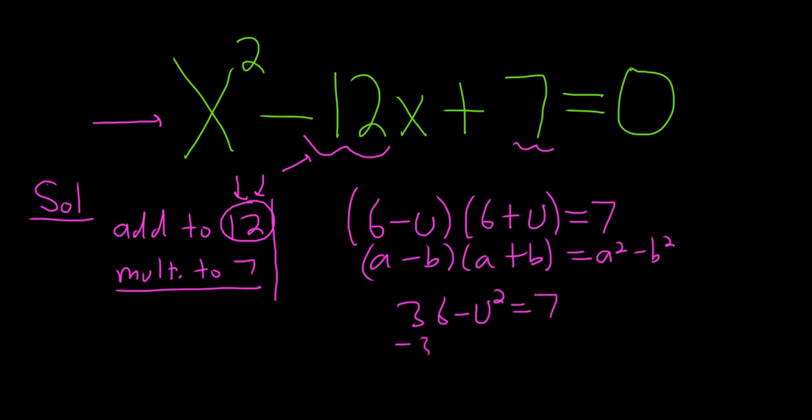You subtract 36, so minus 36, minus 36. That gives us u squared equals negative 29, and that's a negative there as well. Divide by the negative, so we get u squared equals 29.